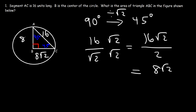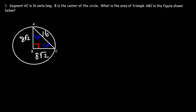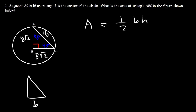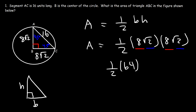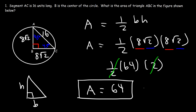So segments BC and AB each equal 8√2. Now that we have the base and height of the right triangle, we calculate the area: Area = (1/2) × base × height = (1/2) × 8√2 × 8√2. First, 8 × 8 = 64; then √2 × √2 = 2; and (1/2) × 2 = 1, so those cancel. The area of triangle ABC is 64 square units.